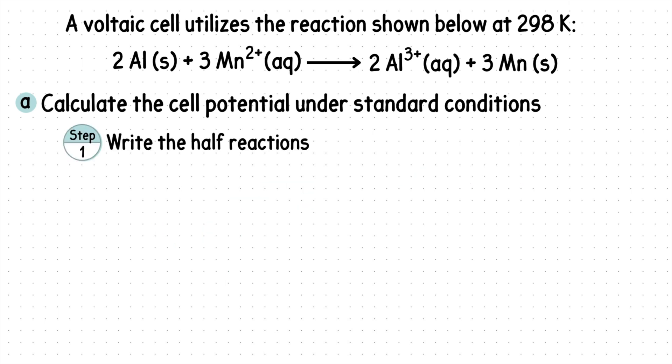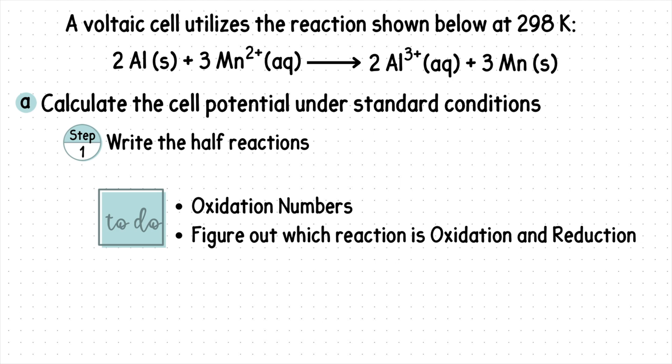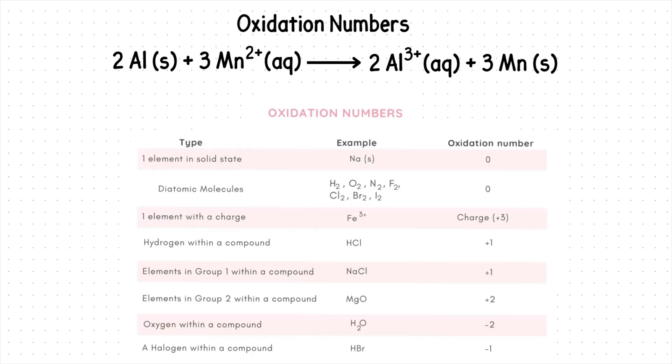Step one, write the half reactions. To be able to do this, we first need to find the oxidation numbers of each substance, then figure out which reaction is oxidation and which reaction is reduction. Let's start with finding our oxidation numbers.